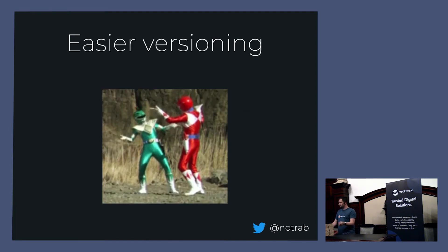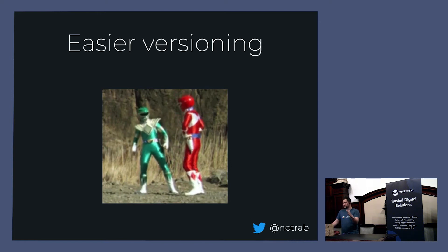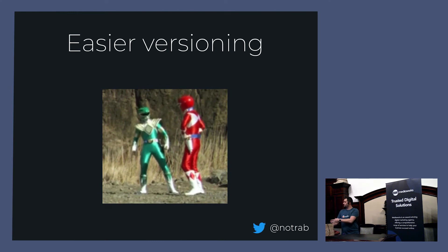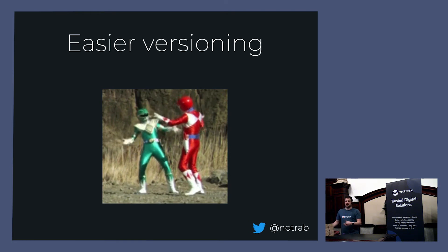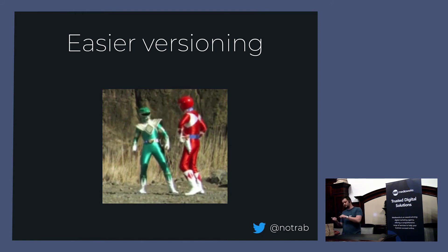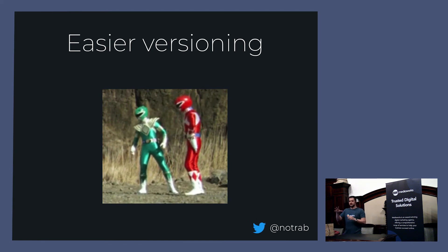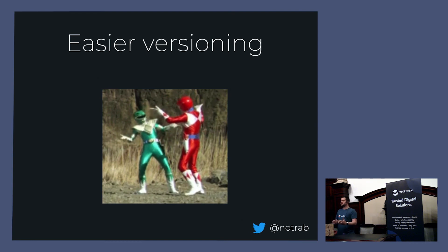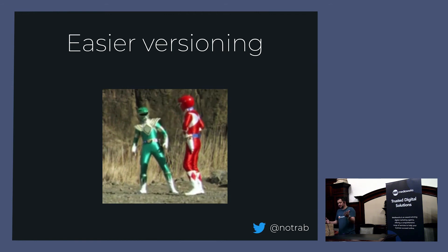Controversially, GraphQL is easier to version — but also kind of impossible to version. You can end up in the same mess as REST by putting GraphQL on a V2 or V3 endpoint. Or you can use directives within GraphQL to deprecate fields — if someone's querying a field you want to remove, you pass some additional feedback to help with that. Tools like Apollo Engine let you see exactly what fields are being called. If people stop using a particular field, Apollo Engine shows you that over time so you can slowly deprecate it.